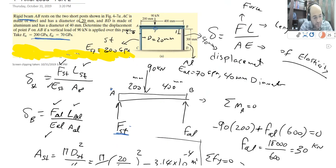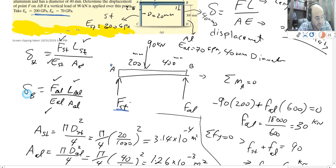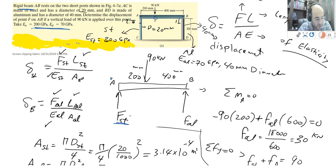We do a moment about point A to find F of aluminum. Then if you do sum of F_y equal to zero, F of steel plus F of aluminum equals 90, so F of steel will be 60. We already found the force for steel and aluminum; I just need to calculate the rest.